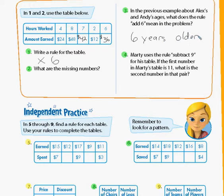Question number four: Marty uses the rule 'subtract nine' for his table. If the first number in Marty's table is 11, what is the second number in that pair going to be? The first number is 11, maybe it's talking about Marty's age. And we're talking about his brother's age. The rule is subtract nine. We're going to assume that his brother's nine years younger than him, so that means his brother would be two years old. 11 minus nine is two.